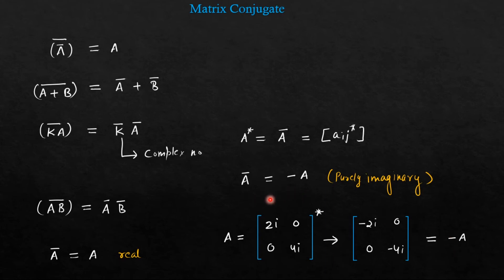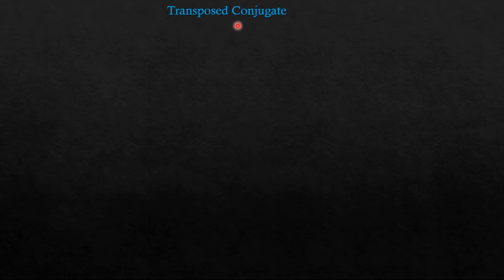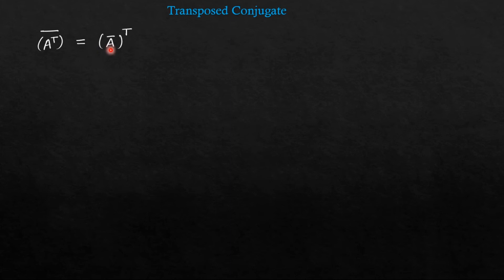Now, if you combine the two operations — that is transpose and conjugate — it is known as transposed conjugate. So it can be A transpose conjugate, or it can be A conjugate transpose. It is represented by A theta. Both these operations are commutative — no need to know which operation to do first; you can do either of them.